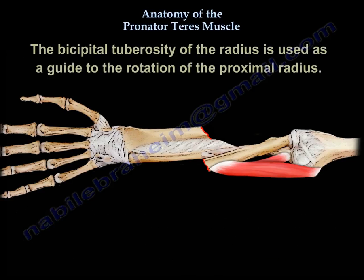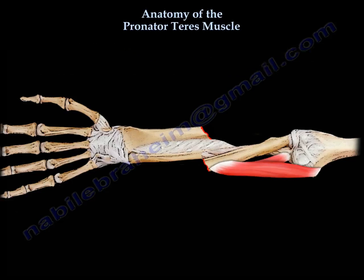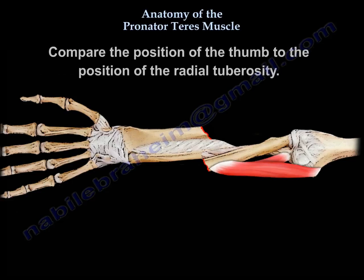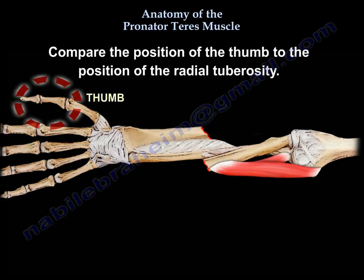The bicipital tuberosity of the radius is used as a guide to the rotation of the proximal radius. Compare the position of the thumb to the position of the radial tuberosity.